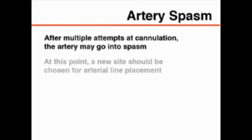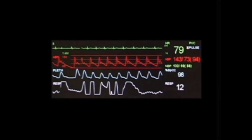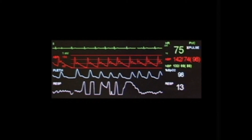Finally, after multiple attempts at cannulation, the artery may go into spasm, which will make it nearly impossible to cannulate. In this setting, attempts at the artery should cease and a new site should be selected. By following these steps, arterial catheterization can be a safe and effective procedure.